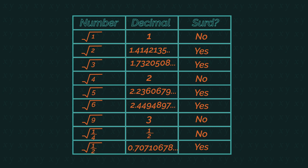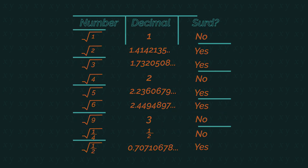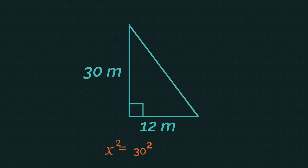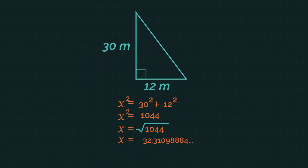Surds are actually really useful. See how much easier it is to write square root 2 rather than all of those decimals. And actually, in Pythagoras, we come across them a lot because it is much more accurate to leave it as a surd than to round the decimal places. So square root 1044 or the simplified surd form of 6 root 29 is much more accurate and easier than writing 31.31 etc.